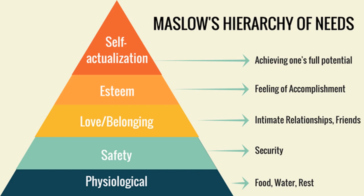So we start from the bottom, and at the side of each level there are some notes which will help you understand what each need is. The first one is the physiological need — for example, food, water and rest. Before anything else, we actually need to have food, water and sleep. We need to make sure we have those needs before we can move up to the next need.